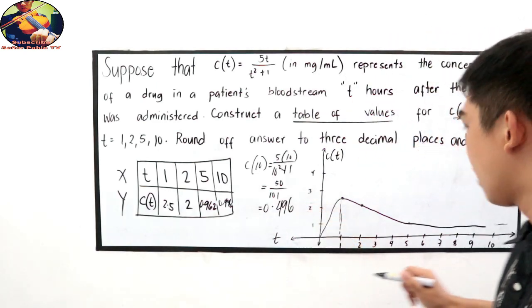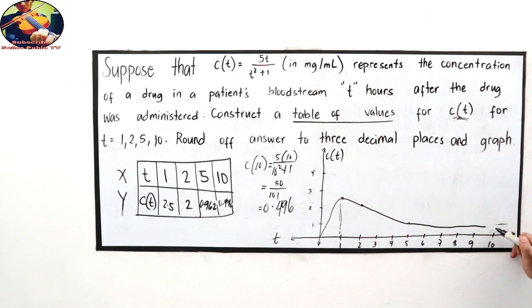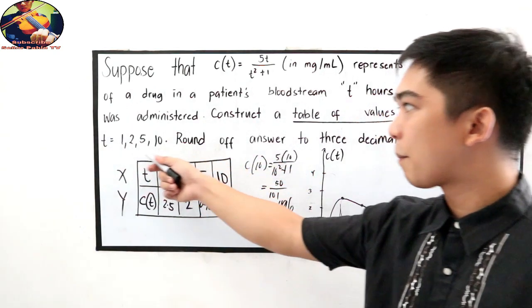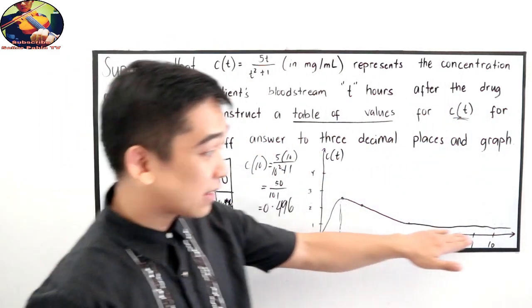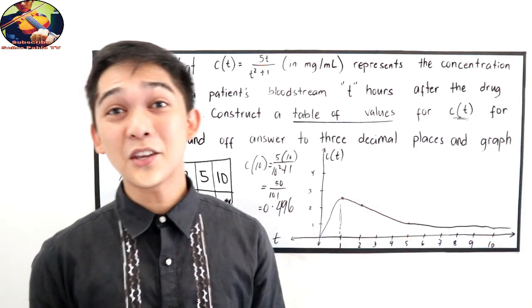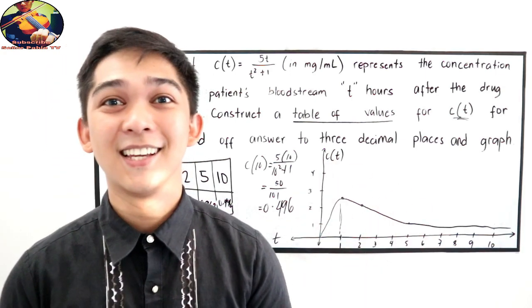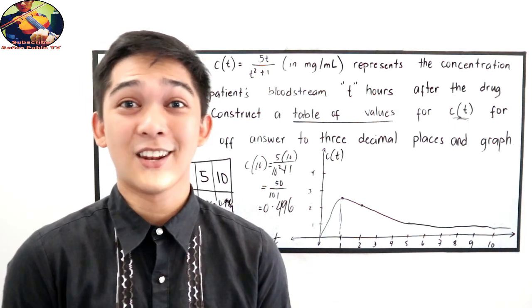Mas mababa pa sa between ng 0 tsaka 1, mas mababa pa sa 0.5. Dito siya. Dapat pababa. Pababa yan ang pababa habang mas yung t hours natin ay papalaki na papalaki. Sorry for that. At least na tama natin. Kaya maganda din na talagang i-check natin yung graph. Thank you for watching at inyong application natin. Sana naintindihan ninyo at magamit nyo sa home study natin sa blended learning.